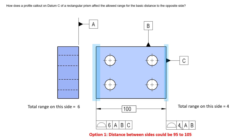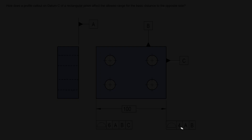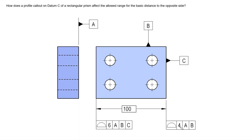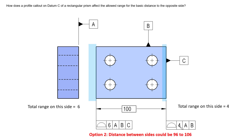I'll argue that option one is not correct, and we'll show why — it gets close but doesn't fully describe how those two surfaces act together. Option two also gives four millimeters to the right surface and six millimeters to the left surface; however, the tolerance zones are shifted to the right.